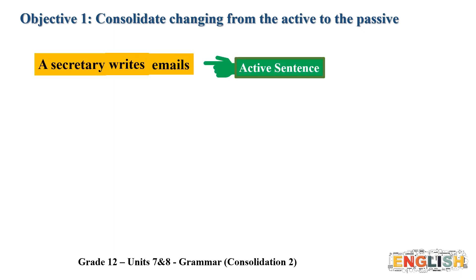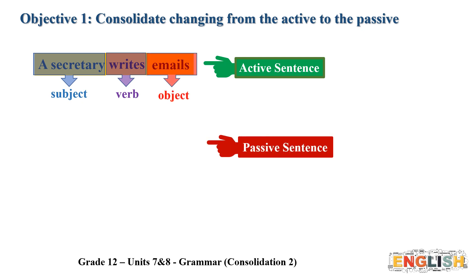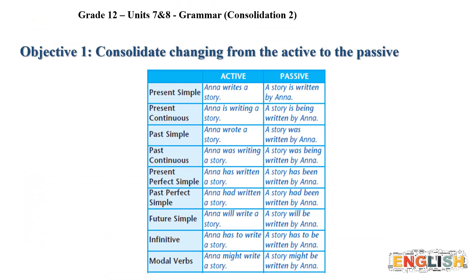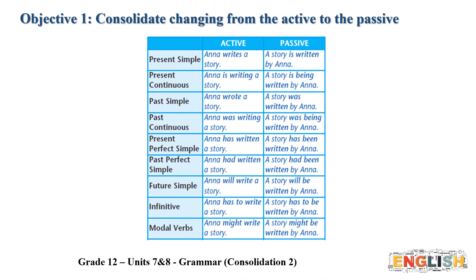Let's see how we change an active sentence into the passive. The active sentence should have three parts: the subject, the verb, and the object. The first step: take the object and move it to the beginning of the sentence. Then write the verb in the past participle, followed by the verb 'to be' in the same tense as the active sentence. Our active sentence here is in the present simple. Please pause the video and examine the chart carefully — it explains how tenses change in the passive voice. The chart is found in your student's book, page GR 20.